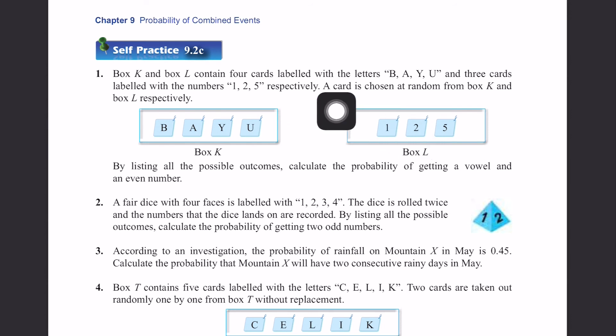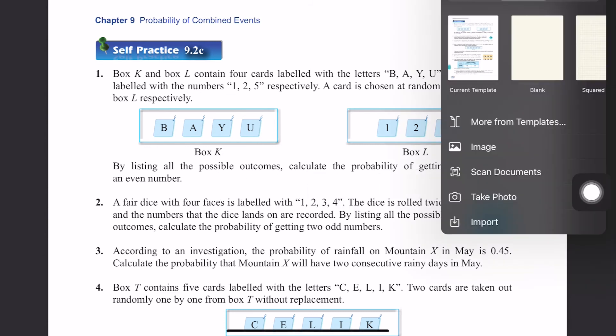A card is chosen at random from box K and box L respectively. What does respectively mean? In order. It means a card is chosen at random from box K and box L respectively. That means they will choose box K first, then box L. Cannot do box L first then box K. Respectively means box K and then followed by box L. It should be in order like that.